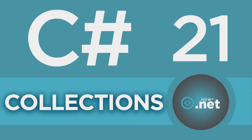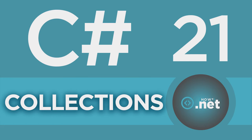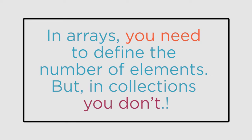We have talked in part 17 about arrays, which are used to group a set of related objects. We could create a set of any data type and access elements using indexes. Collections are similar to arrays but provide a more flexible way of working with a group of objects. In arrays you need to define the number of elements when the array is declared, but in a collection you don't need to define the size beforehand. You can add elements or even remove them from the collection at any point of time.